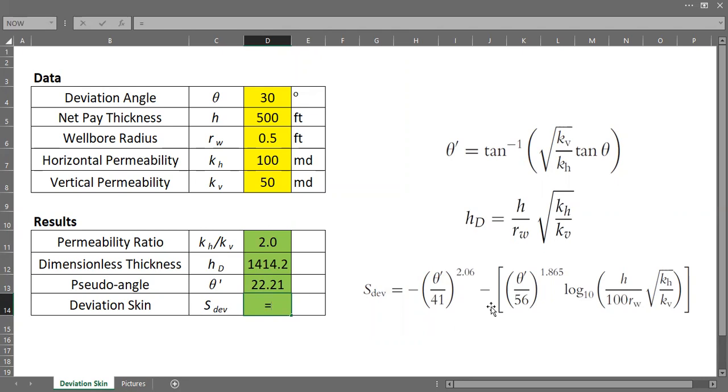And then I can use these values to finally arrive at deviation skin. We will use this formula. Minus, open, pseudo angle divided by 41, close, to the power of 2.01. I will be careful here. Minus something to the power of 2.01 can be indefinitive. So rather than using this form, I will carefully use it. Minus 1 multiplied by these numbers. So Excel will calculate them and multiply it with minus 1. Just to be careful. And then I will continue.